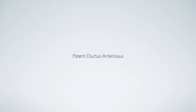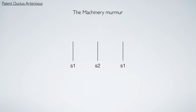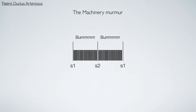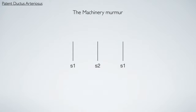Our final murmur in the series is that of patent ductus arteriosus, described as a machinery murmur. It occurs throughout both systole and diastole and is represented visually with a plateau wave that runs throughout the entire cardiac cycle. To help commit this to memory, think about a continuous burring sound that runs the whole length of the cardiac cycle.